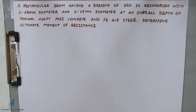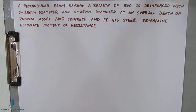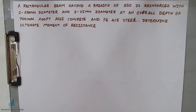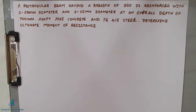Hello friends, welcome back to All About Structural Analysis and Design. In our previous video I discussed the sections of RCC — there are three types: balanced section, over-reinforced section, and under-reinforced section. I also explained why we should always provide an under-reinforced section.